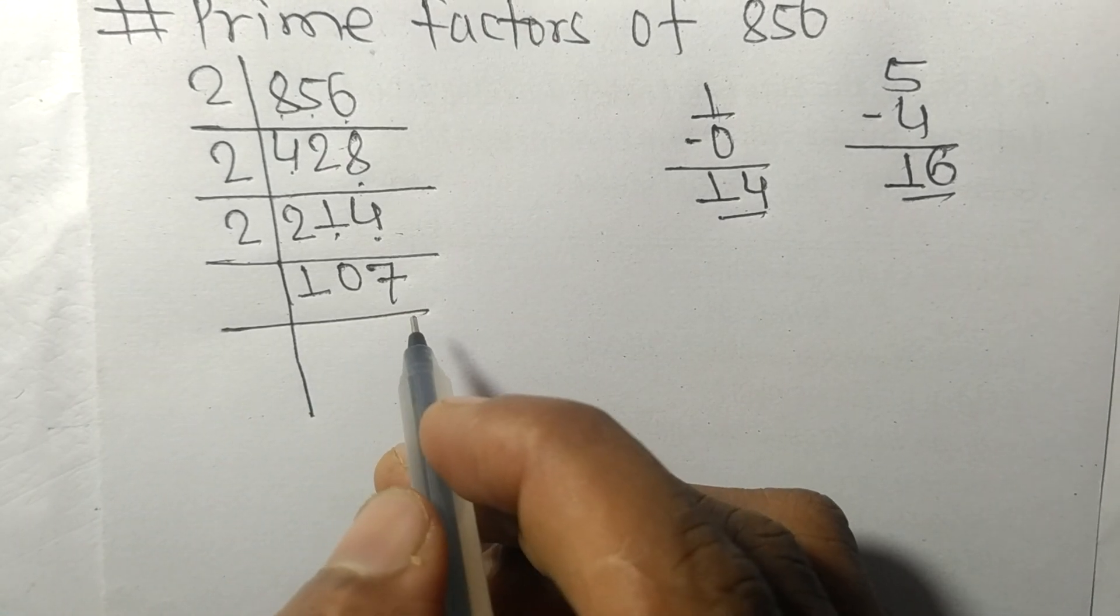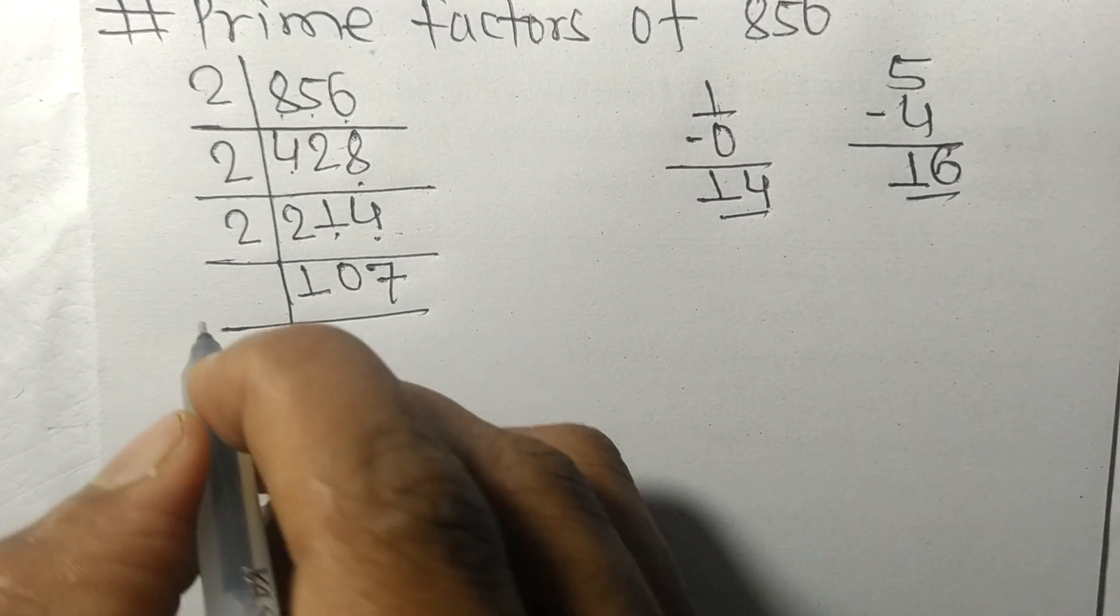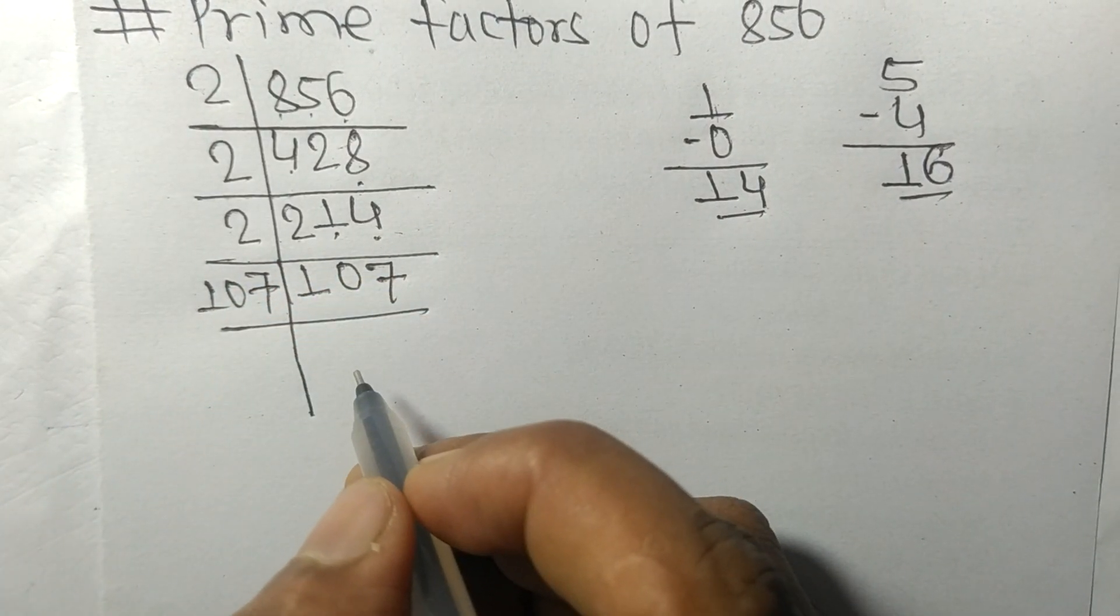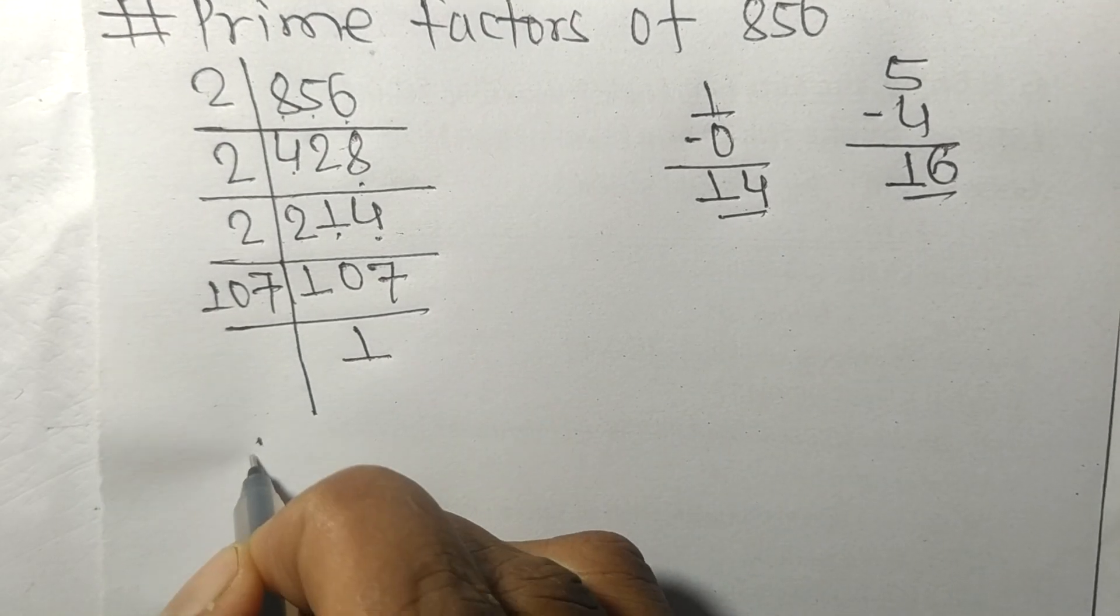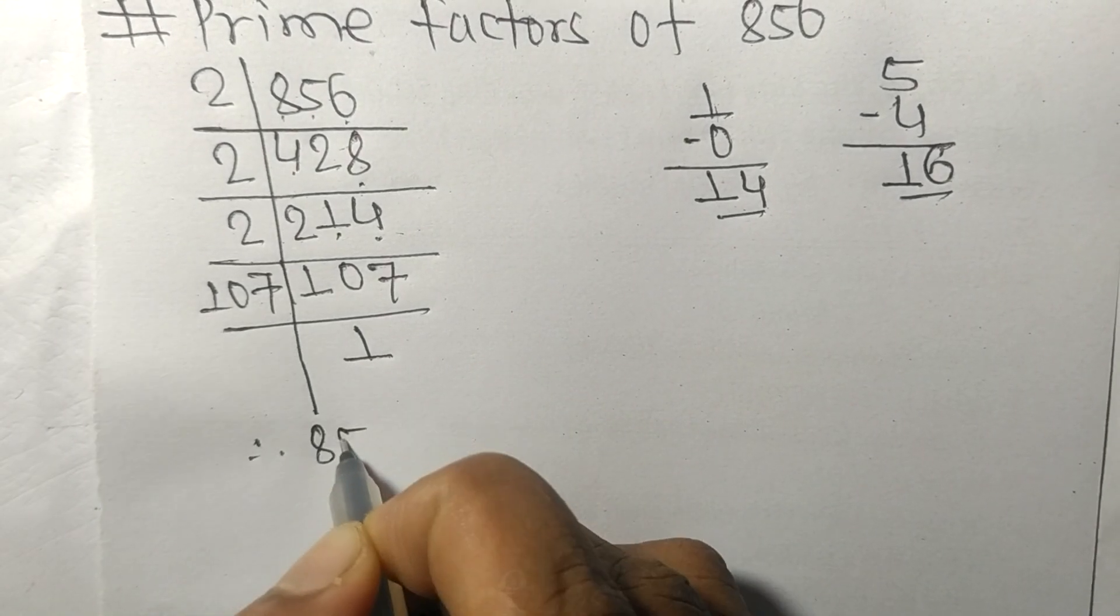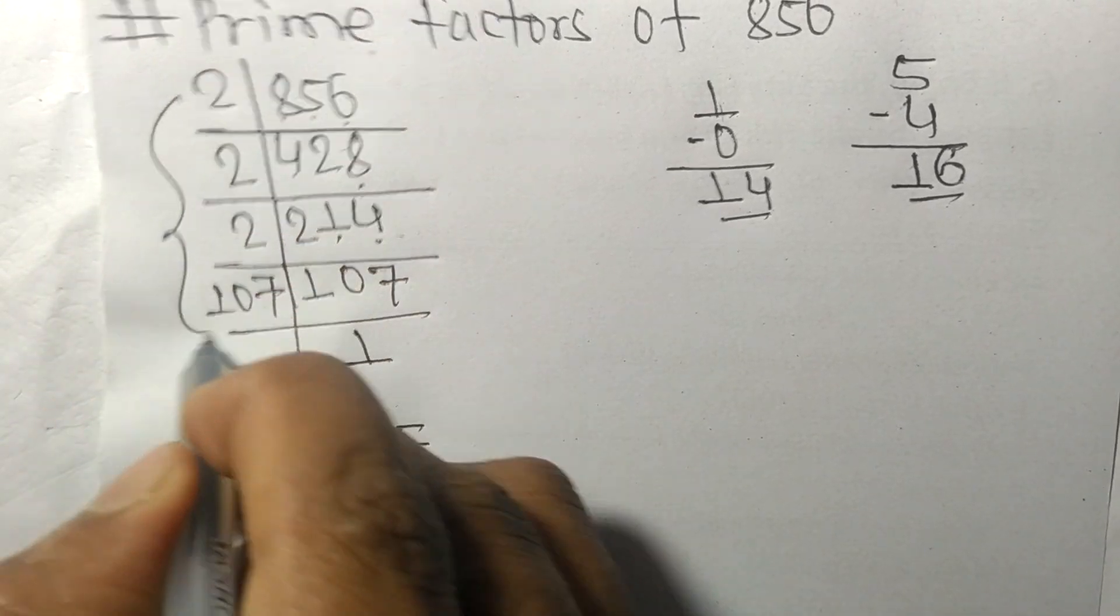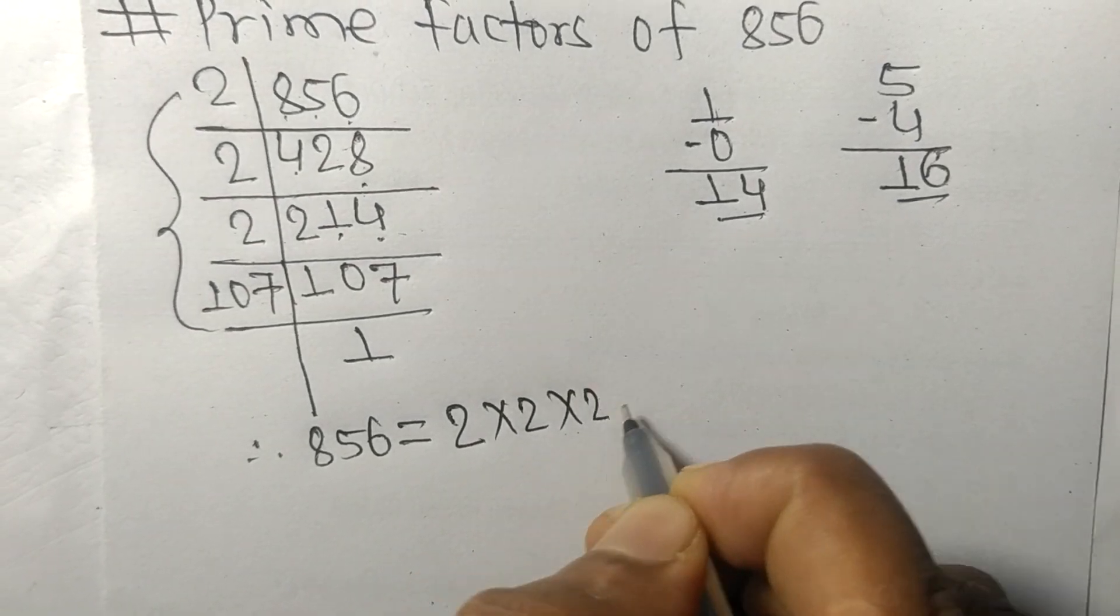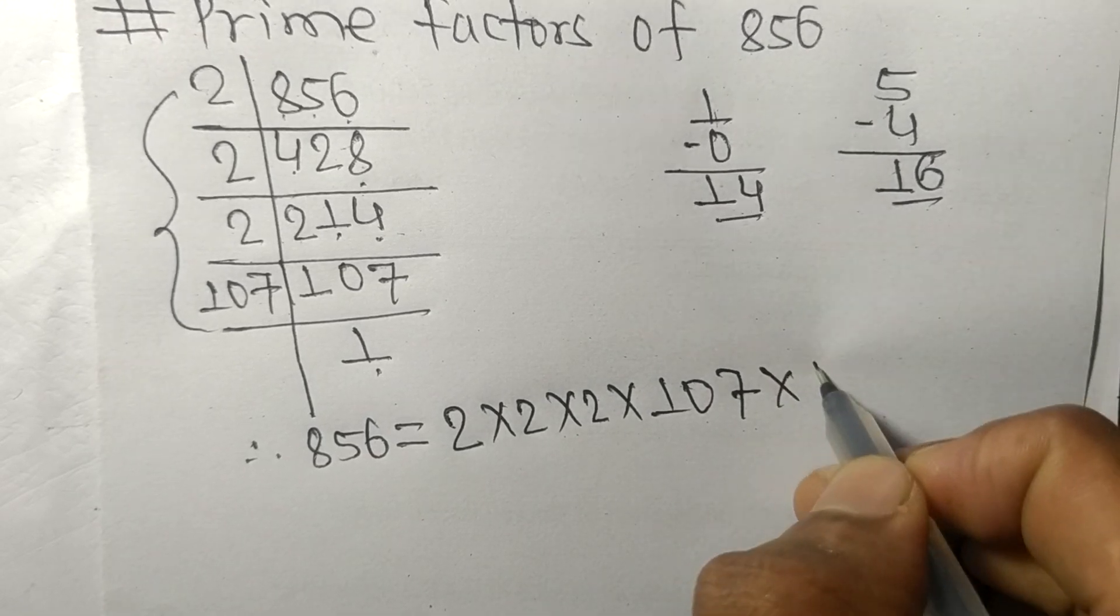107 is our prime number, so it is exactly divisible by 107 only. And on dividing we get 1. Therefore, 856 is equal to, from this side, it is 2 times 2 times 2 times 107.